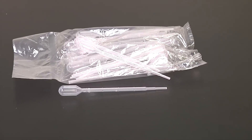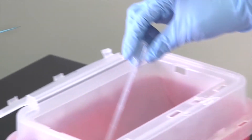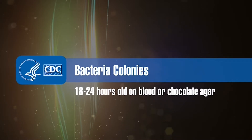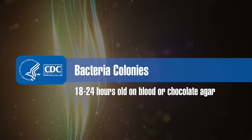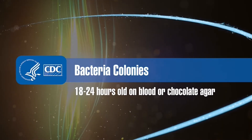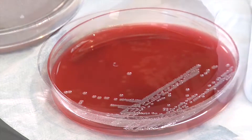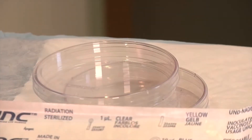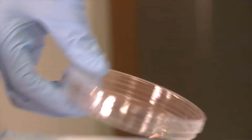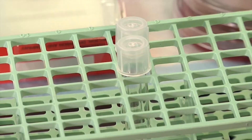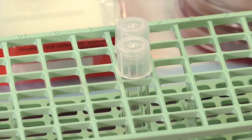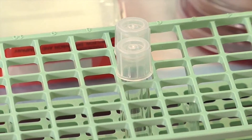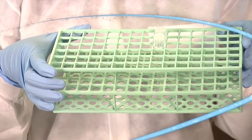You will also need pipettes, a biohazardous waste container, and young colonies of bacteria on agar media. Preferably these colonies should be 18 to 24 hours old, and blood or chocolate agar media can be used. If you are performing the slide method, two clean glass slides and two petri dishes will be needed to contain aerosols produced by the catalase reaction. If you are performing the tube method, two 12 by 75 millimeter test tubes with caps and a test tube rack will be needed.